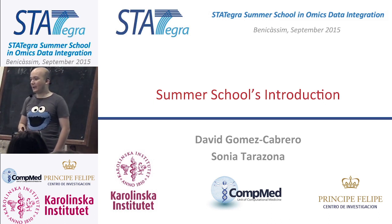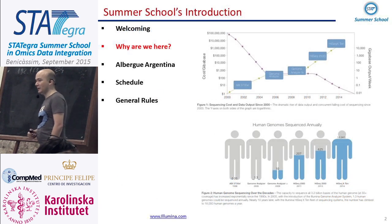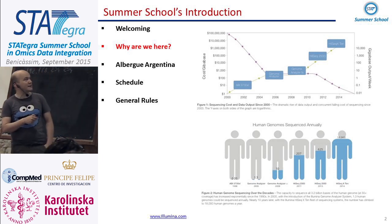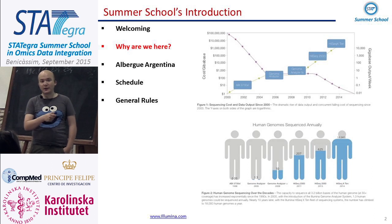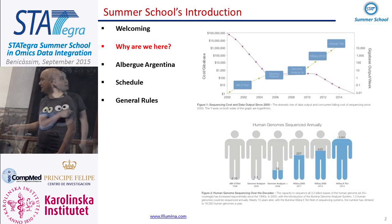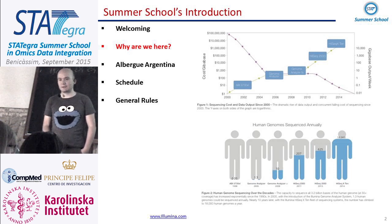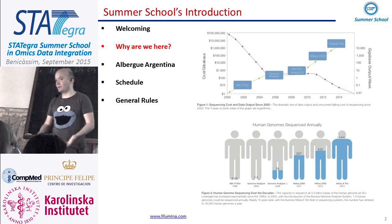I think everyone has a bit of a clear idea. We have a situation where we are getting much more data, and part of this is the decreasing cost of sequencing and the increasing number of samples that we are sequencing. This is if we are talking about next generation sequencing, but this is happening for all the different omics. The amount of data is growing, the amount of samples is growing. We are getting a situation where the bottleneck is becoming the analysis of the data, and not as much as before the generation of the data.